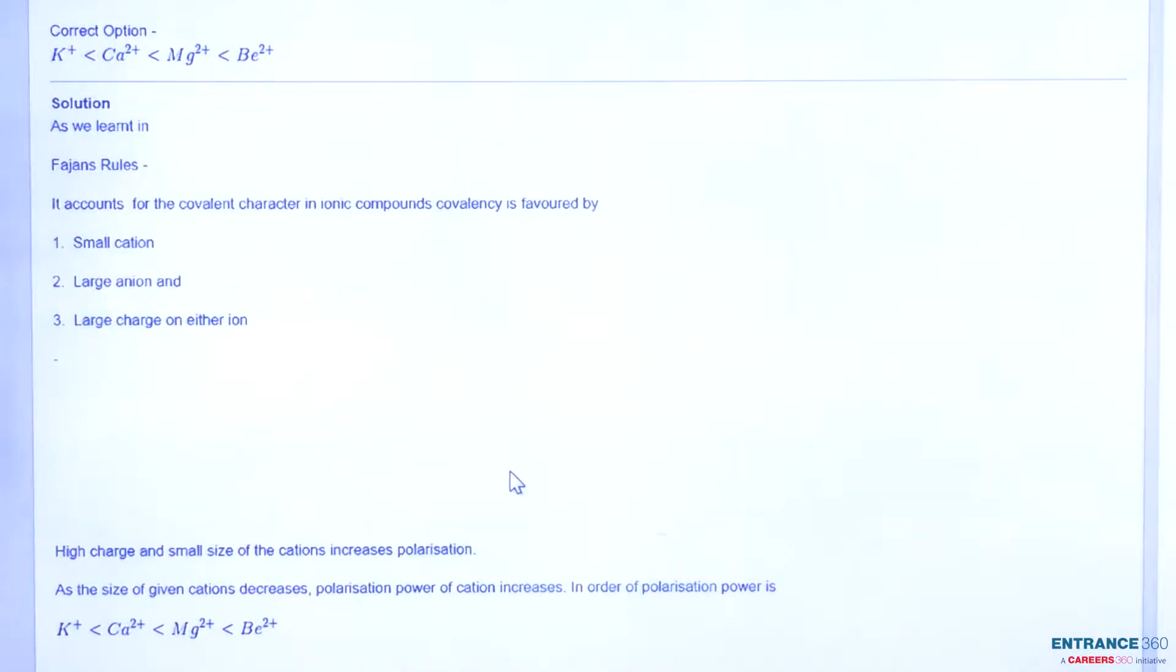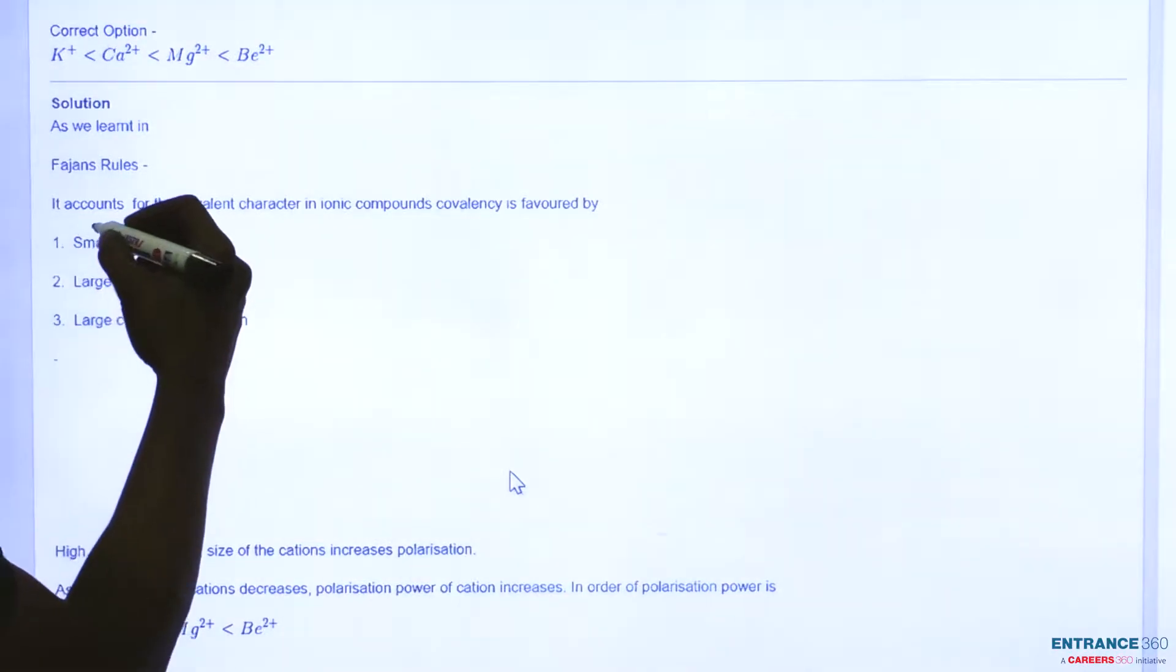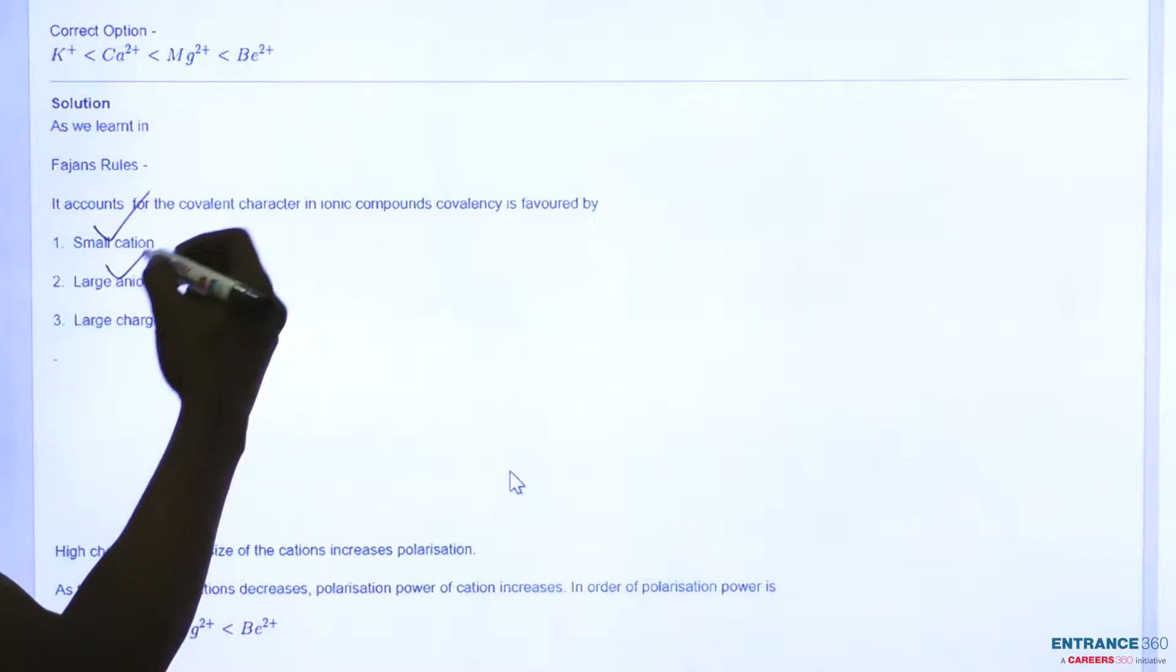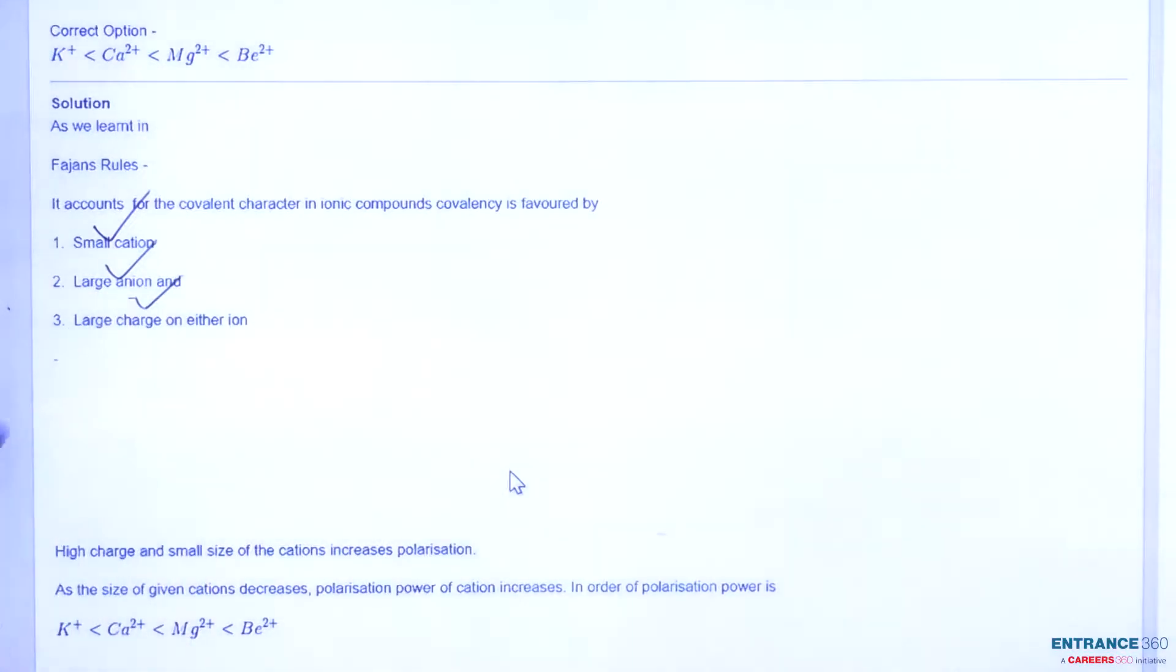In order to solve this question, we will use the concept of Fajan's rule, which accounts for the covalent character in ionic compounds. Covalence is favored by small cation size, large anion size, and large charge on either ion. So the charge which has a larger value on the ion will have more polarizing power.